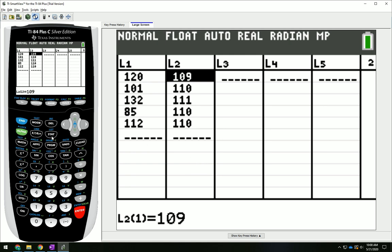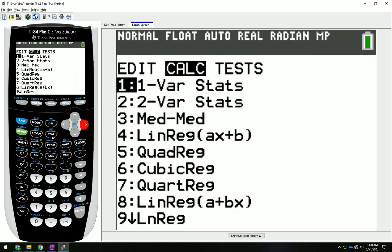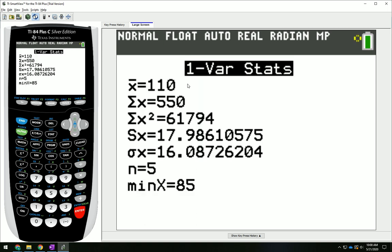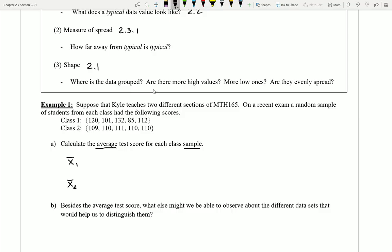Now once those have been entered, you can easily go ahead, click on stat, go to calculate, and make sure that you're going to do a one var stats with list number one for class one. Notice here when I go to calculate, I end up with an X bar of 110. So I'm going to go back here and state that my X bar was 110, we'll call those points.